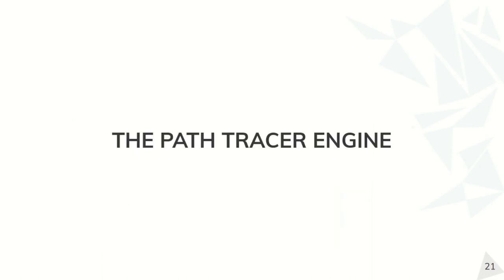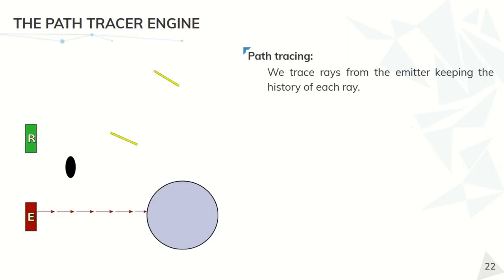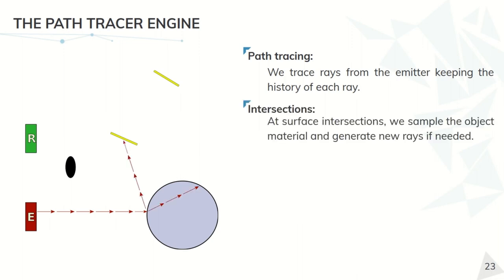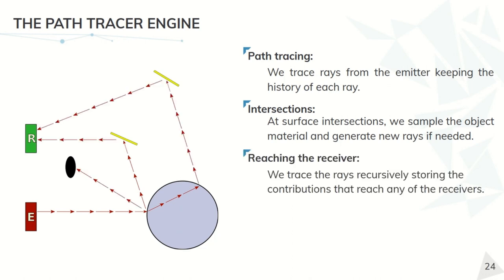Now I am going to talk about the path tracing engine, the first implementation of the physics engine. Let's describe the path tracing algorithm in a very simplified way. As we saw in the previous section, in the emitter we generate a set of rays that we trace until we reach some geometry. There we sample the physical interaction, generating more rays if needed, until we reach some receiver.